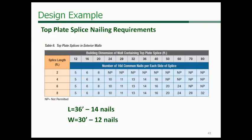For the top plate splice, you go through the picture and it tells you every connection and every table, with an accompanying picture. For the long 36-foot dimension of the building, a 2-foot splice length is not permitted, so we go to a 4-foot splice length requiring 14 16D common nails for each end of the splice. For the 30-foot side, interpolating gives us 12 nails.